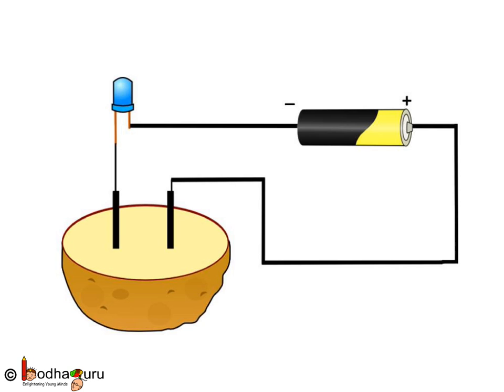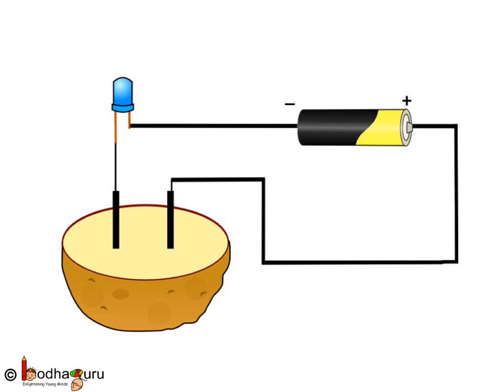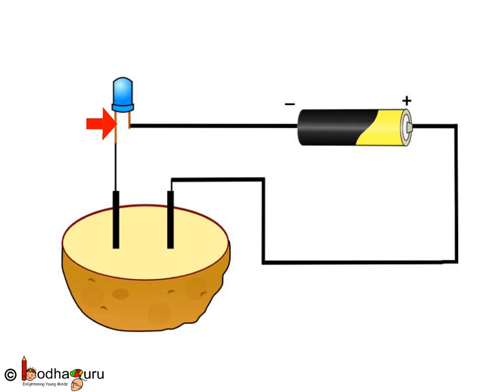Take half a potato, a cell and a LED. Now, put two pieces of copper wire in the potato. Keep little distance between them, say 1 to 2 cm. We connect the positive terminal of the cell to the copper wire in the potato. The negative terminal of the cell gets connected to the shorter lead of the LED. Now, we connect the other piece of copper wire to the longer lead of the LED to complete the circuit.